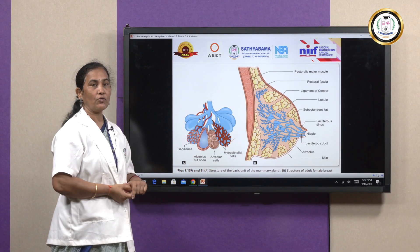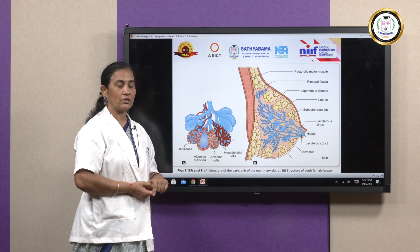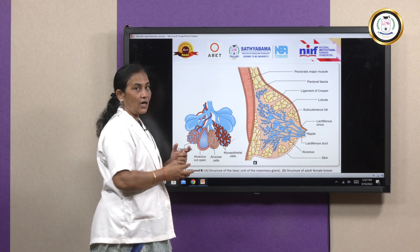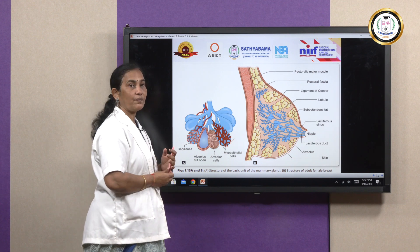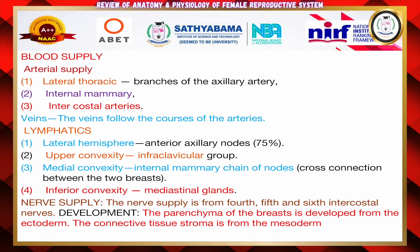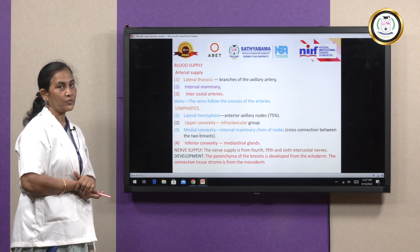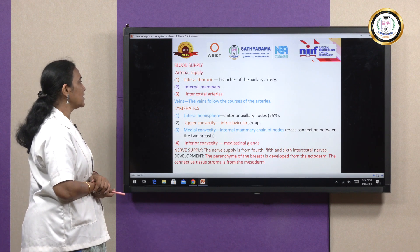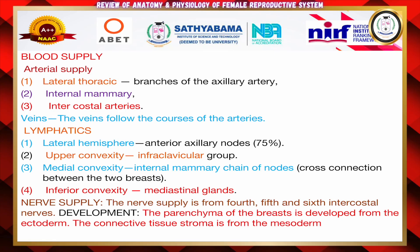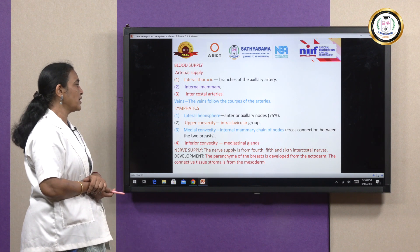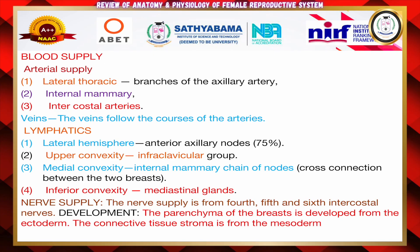During childbirth, prolactin hormone triggers the lobules and lactiferous ducts to prepare and liberate milk when the baby sucks. The blood supply is from the lateral thoracic branches of the axillary artery, internal mammary, and intercostal arteries. The veins follow the course of the arteries. Lymphatic drainage is to the lateral hemisphere, upper convexity, medial convexity, and inferior convexity. The nerve supply is from the fourth, fifth, and sixth intercostal nerves. The parenchyma of the breast develops from the ectoderm and the connective tissue stroma from the mesoderm.